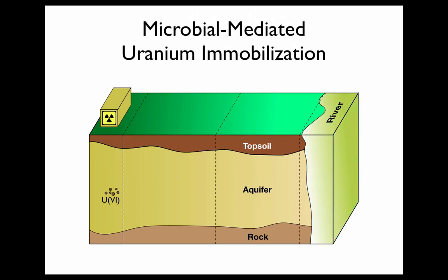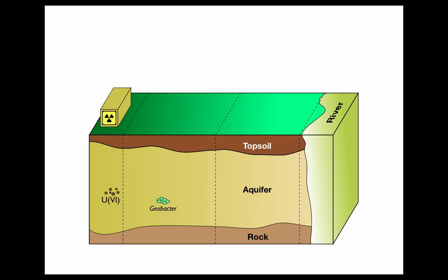Microbial-mediated uranium immobilization is a novel strategy that takes advantage of microorganisms pre-existing within the aquifer such as Geobacter species. The addition of substrate such as acetate into the subsurface stimulates the oxidation of acetate and the simultaneous reduction of Iron-3 and Uranium-6 by these microorganisms.